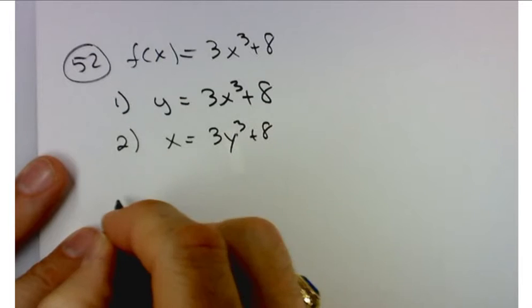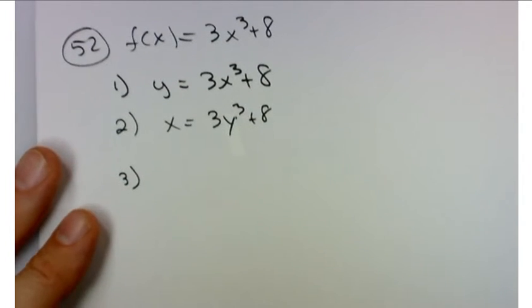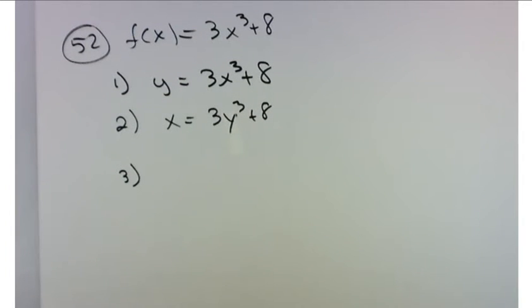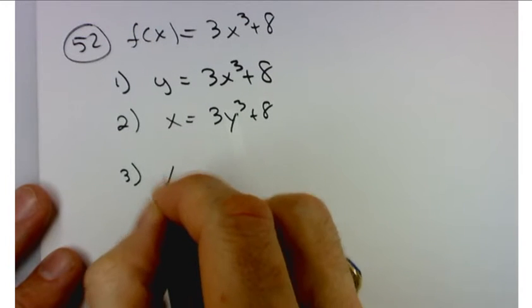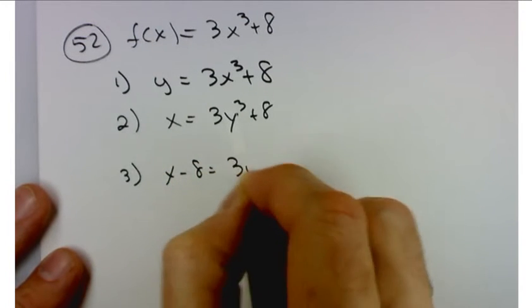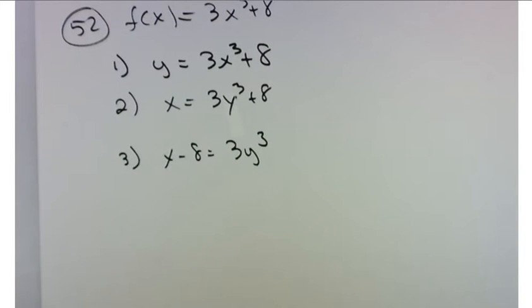Solve for y. What kind of steps do I need to do to solve for y? What would you do first? Yeah, I'd subtract 8 from both sides. So x minus 8 equals 3y cubed. Good. Let's not make Victoria do all the work. Divide by 3. Good.